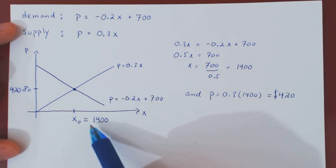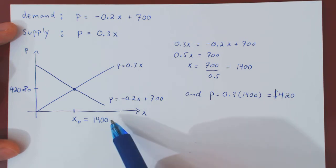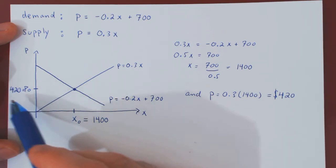the quantity supplied by the suppliers and demanded by the consumers is the same. 1400 units for a unit price of $420.